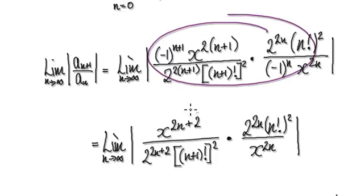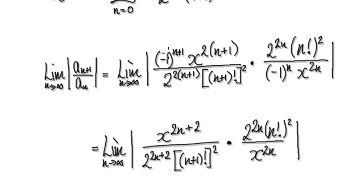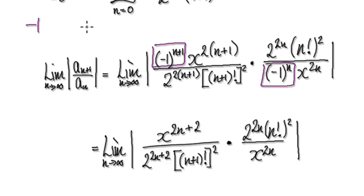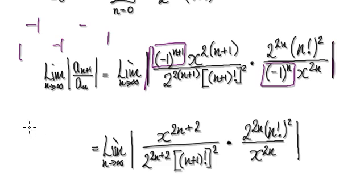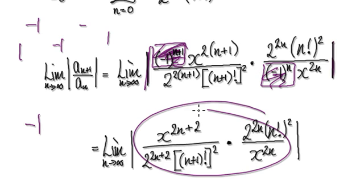Now it's just a matter of tidying this whole thing up step by step. If you look at this term and this term here and merge the two together, you're going to get either 1 or negative 1. And then you're taking the absolute value here. So if it's 1 or negative 1, taking the absolute means you can pretty much ignore these two terms.